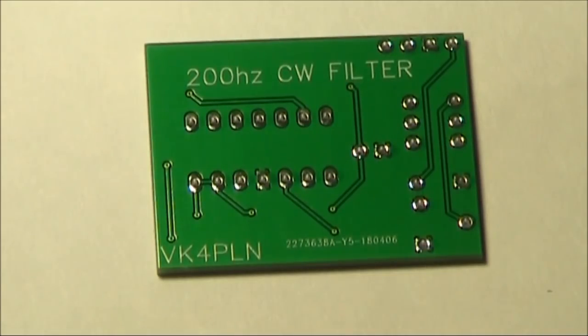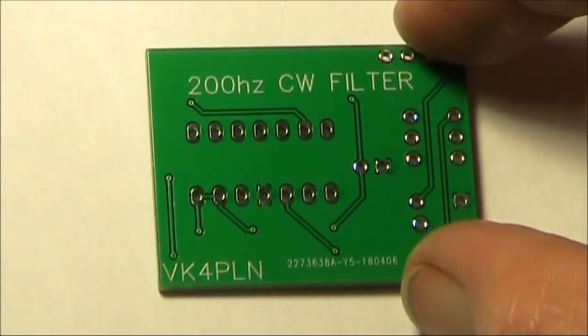The Micro-BitX is largely an SSB transceiver with about 3kHz selectivity. If you want to get better performance on CW when you're receiving weak signals, then you need something like this, a CW filter.